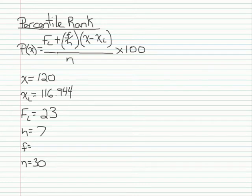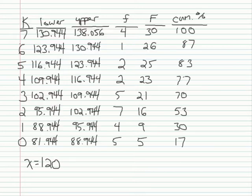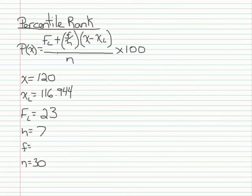f is the frequency of the interval containing the score. To find f, I go back to the interval that contains my score and I look at the frequency, and that's 2. So f is going to be 2.